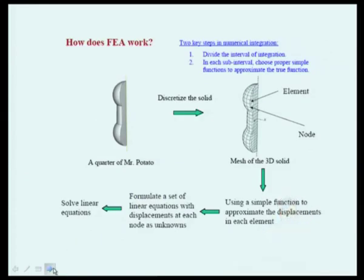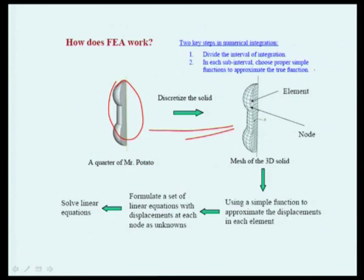We can directly translate this to FEM. If we want to increase the accuracy of a model by FEM, we divide into sub-elements — more elements means better results. Within each element, we can use a higher-order approximation function. The higher the order, the better the approximation to the exact solution. So there is a one-to-one comparison with what we did for numerical integration and the finite element method.